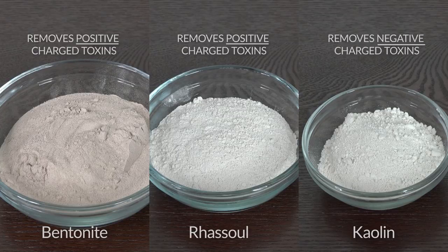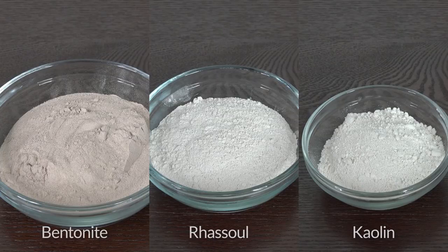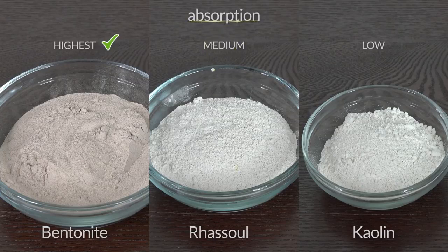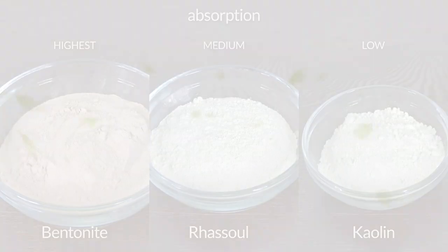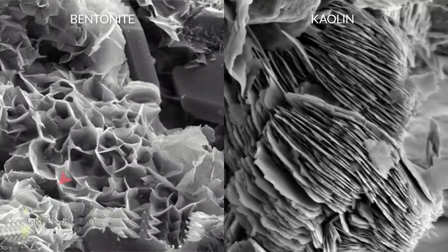So bentonite and rasul clay are really good at removing positively charged toxins from your hair, and kaolin clay is really good at removing negatively charged toxins from your hair. So you're covering all your bases when you mix them. As far as absorption rate, bentonite clay scores the highest compared to rasul and kaolin clay. Kaolin clay has very low absorption abilities compared to montmorillonite clays like bentonite.